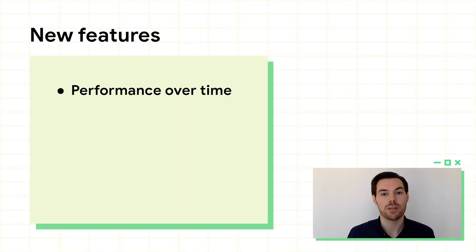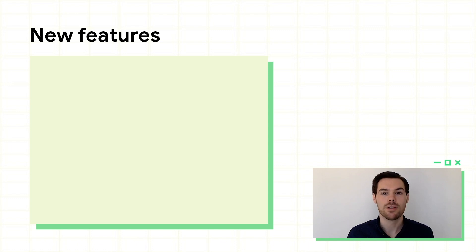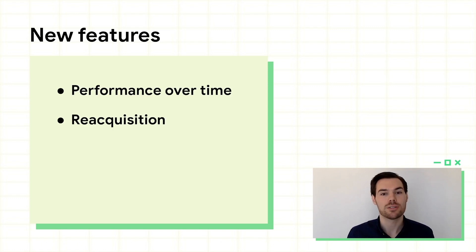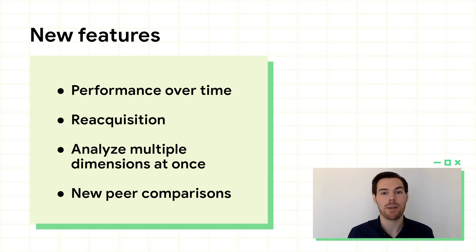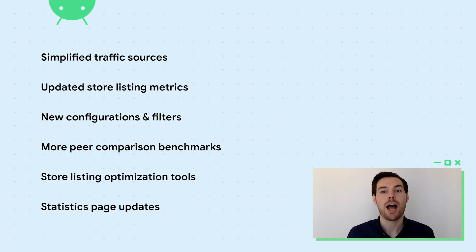We'll do that in a few ways. First, by showing you a time series view of your store performance metrics, so you can see what's changing, when, and why. Second, by including new dimensions like returning users, which we know are important to your business. Third, by letting you filter multiple dimensions at the same time for a more targeted view of the data. And finally, by extending peer comparison benchmarks to all of your traffic, so you can identify more marketing opportunities. I'll show you how to use these features and more to make the most of the new acquisition reports in Google Play Console. Timestamps are included in the video description if you want to jump ahead.